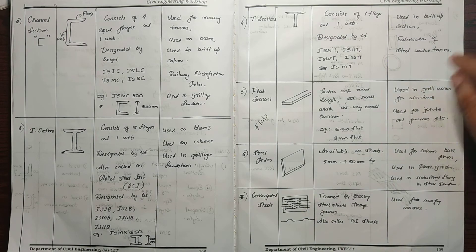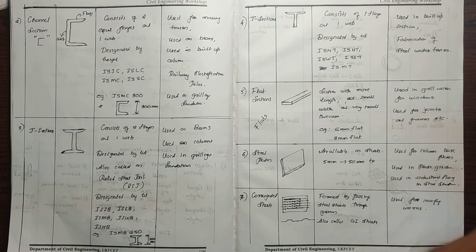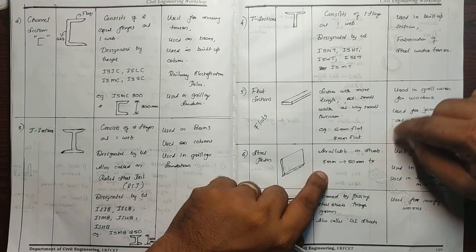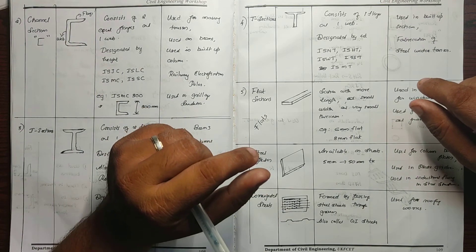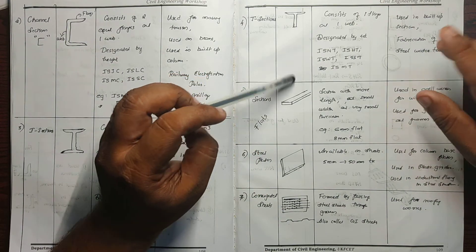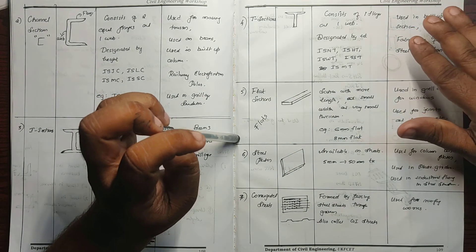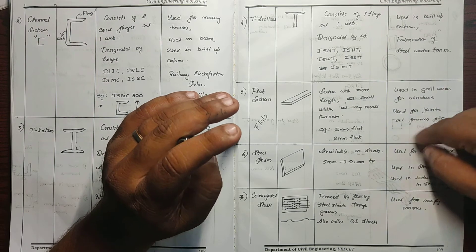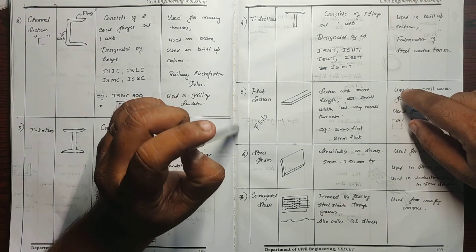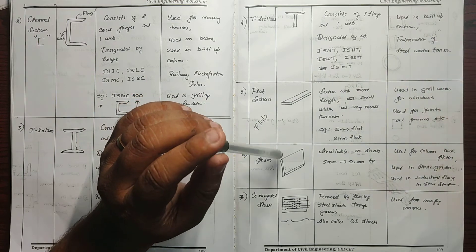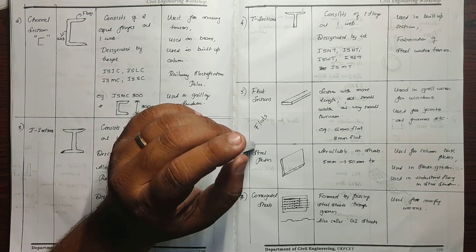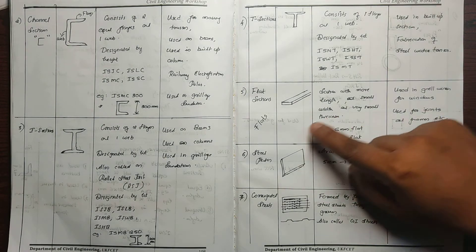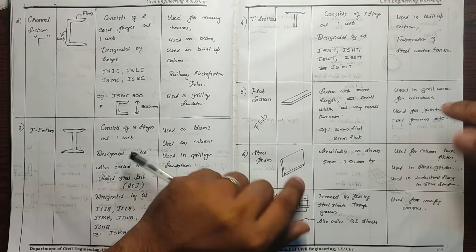Steel Plates are like sheets and are available in thicknesses from 5mm to 50mm. Steel plates are included in buildings — connected and attached as sheets. They are also used in bridges, civil blocks, and electronics, as well as in small and thick structural applications.